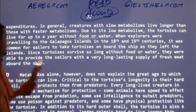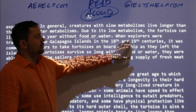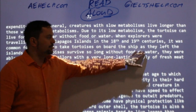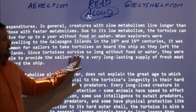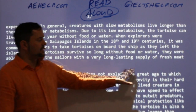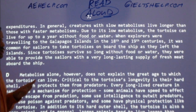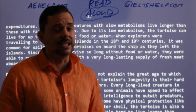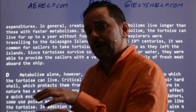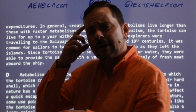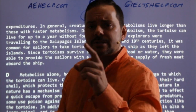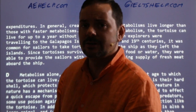When explorers were traveling to the Galapagos Islands in the 18th and 19th centuries, it was common for sailors to take tortoises on board the ship as they left the islands. Since the tortoises survived so long without food or water, they were able to provide the sailors with a very long-lasting supply of fresh meat aboard the ship. So paragraph C — the third paragraph. I'm on my Galapagos island, moving super slowly. Oh no, a sailor just took my friend — he's going to be eaten.